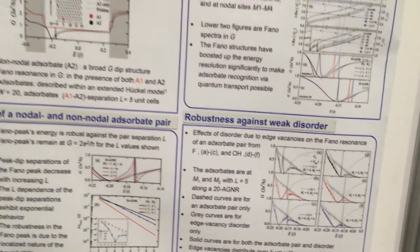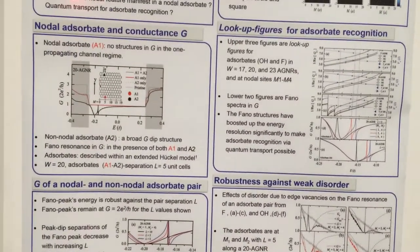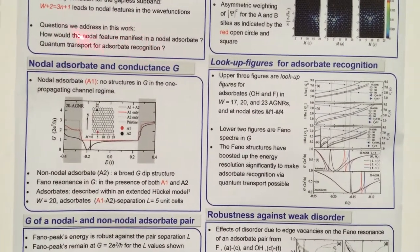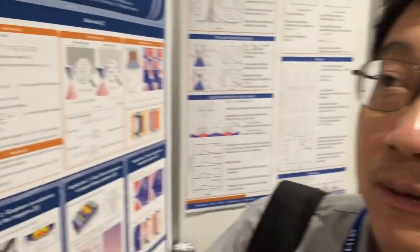That is the question we want to address in the beginning, and we find out that the result is quite good. How would the nodal feature manifest in nodal absorbing? Another thing is quantum transport for absorber recognition. That is our conclusion, and it is robust against weak disorder.